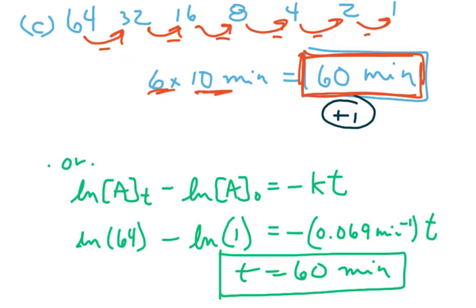So we could just use this equation and substitute in. So we know that the concentration at time t is 64. The concentration at time zero is 1, and the value of K we figured that up above, and we're solving for t. So we just substitute into the equation and it comes out to be 60 minutes.